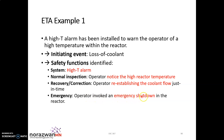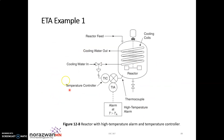The fourth safety function is emergency shutdown — the operator invokes an emergency shutdown of the reactor. So the four safety functions for this reactor are: the high temperature alarm, the operator noticing the high temperature via process monitoring, the operator reestablishing the coolant flow as the recovery/correction step, and finally the emergency shutdown.